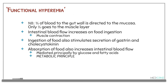What is functional hyperemia? Two-thirds of the blood supplied to the gut wall is usually directed to the gut mucosa and only one-third goes to the muscle layer. Intestinal blood flow usually increases on food ingestion because of increased muscular contraction or peristaltic movements. Ingestion of food stimulates the secretion of hormones known as gastrin and cholecystokinin. Absorption of food increases intestinal blood flow, mediated principally by glucose and fatty acids, and also as a result of the normal metabolic principle.